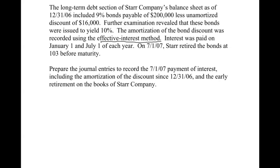Interest is paid semi-annually. Notice we're jumping ahead to July 1st, 2007, meaning we're going to retire the bonds at 103, but we also have an interest date on July 1st. The January 1 date would have been captured with the 12/31/06 numbers because we would have accrued those up to that point. So we're good there, but we need to account for July 1 interest and then retire the bonds, meaning we're going to catch everything up to July 1st.